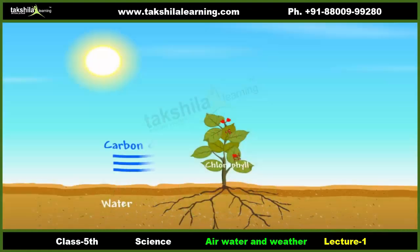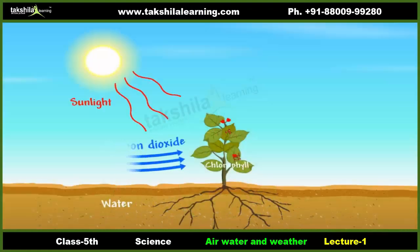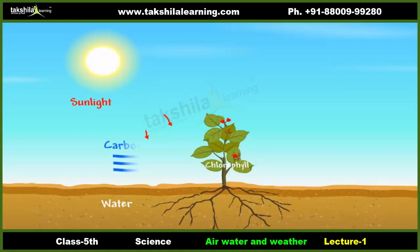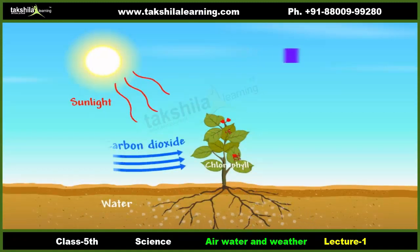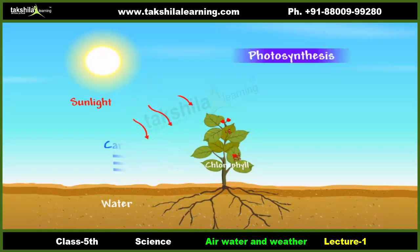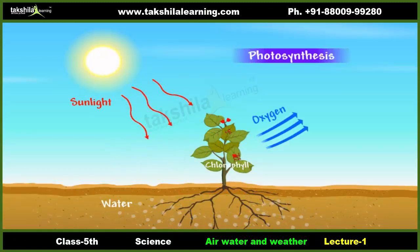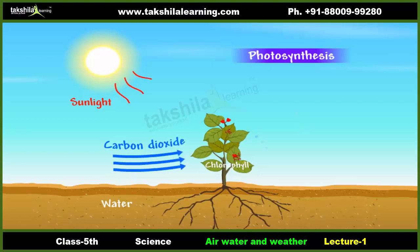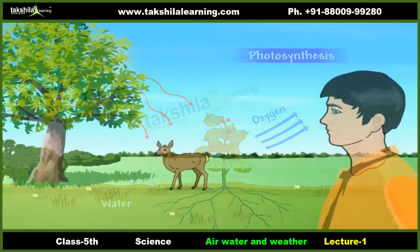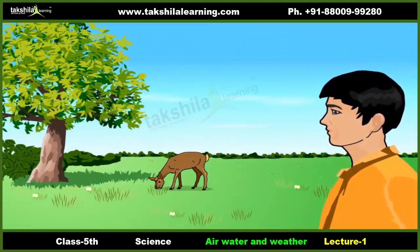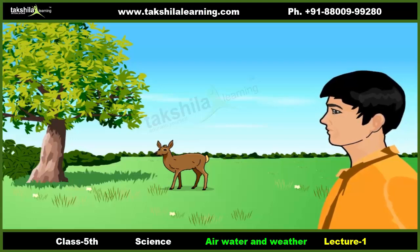Air is very important for almost all life on earth, including plants and animals. Plants need carbon dioxide from air to do photosynthesis and release oxygen into the air. Human beings and animals need to breathe air to get the oxygen they need to survive.